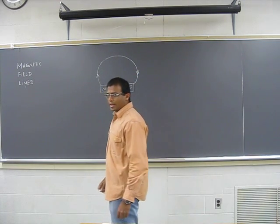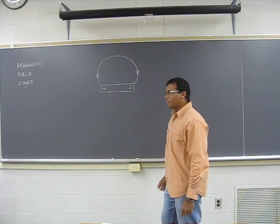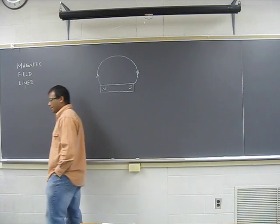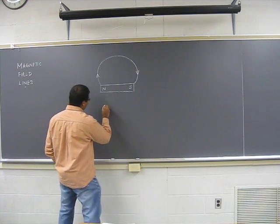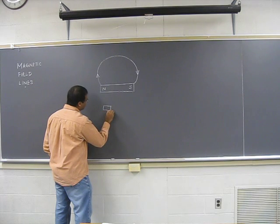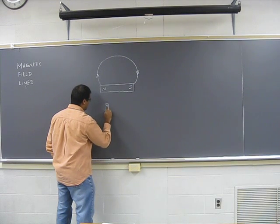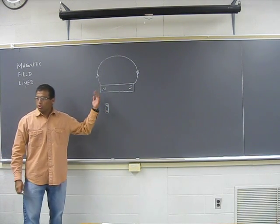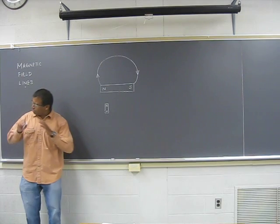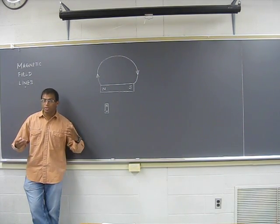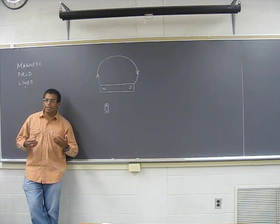Now the next question is: what is a field line? It's a construct, a model that we have built to understand. Let's say I want to place a small magnet closer to the magnet over here. Obviously north-north is going to repel, so this will push this guy away, or at least try to push this guy away.